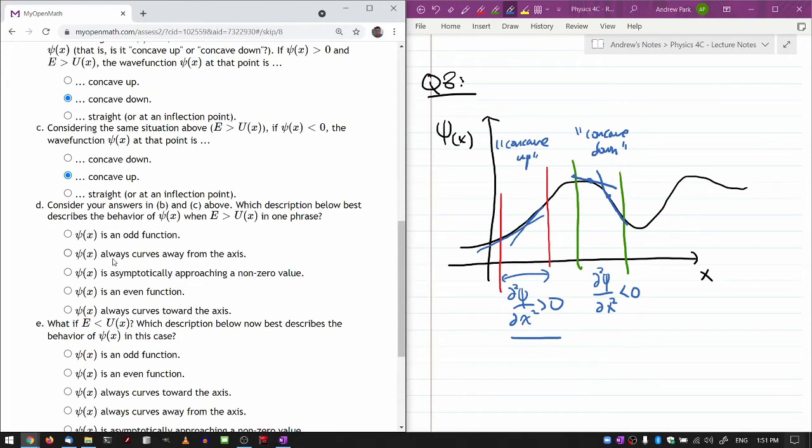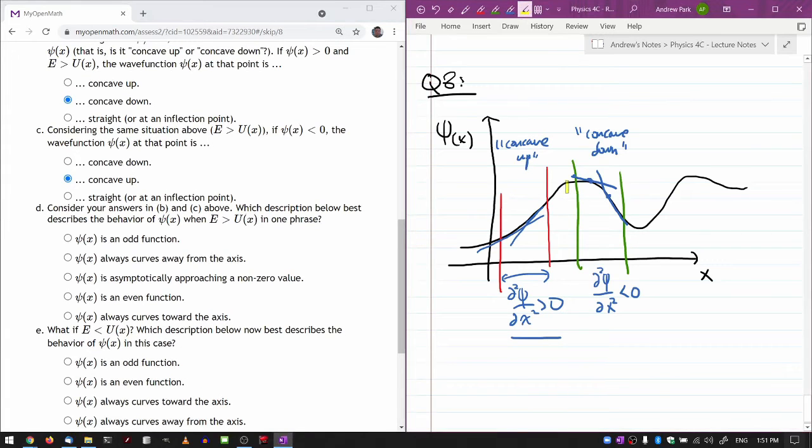Psi of x always curves away from the axis. The second derivative does describe curvature, but I would describe this as curving towards the x-axis, not away. Psi of x is asymptotically approaching a non-zero value—I don't get that feeling by looking at this behavior. It's not asymptotically doing anything; if anything, it's plunging towards zero.